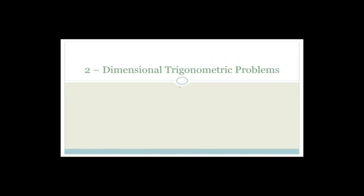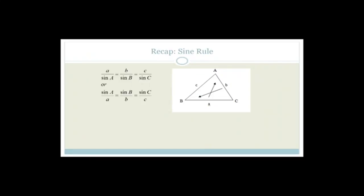Now we're going to move on to two-dimensional trigonometric problems. Before we move on, we need to go through ratios that don't use a right angle. So far we've used SOHCAHTOA, which needs a right angle. Now we're going to talk about the sine rule: a/sin A = b/sin B = c/sin C, or alternatively sin A/a = sin B/b = sin C/c. You only need two of the three ratios at a time — they're just showing you that these ratios are equal no matter what.